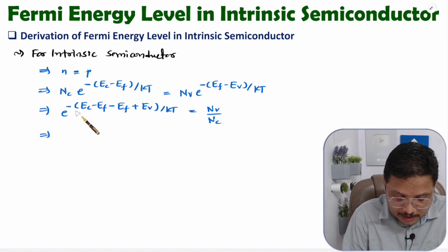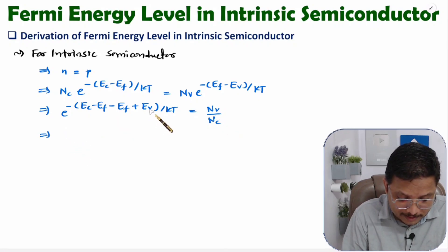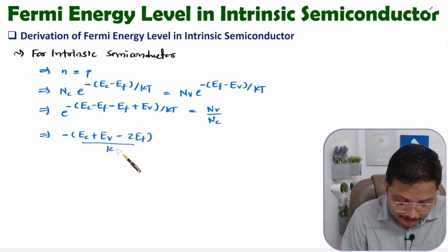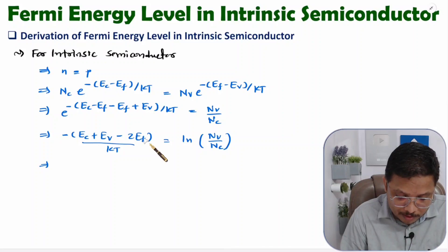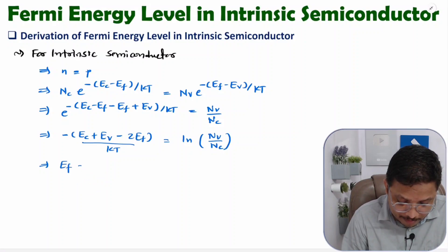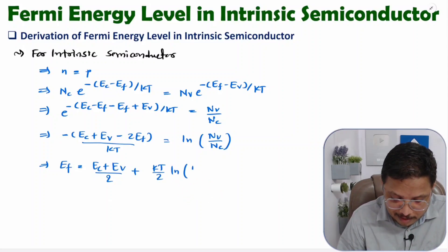This term has e to the power, so if you want to isolate the energy, you take the natural log on both sides. On the left side you will have (minus Ec plus Ev minus 2Ef) divided by KT, and on the right side ln(Nv/Nc). To isolate Ef, bring Ec plus Ev to the other side and multiply through by KT, giving Ef equals (Ec plus Ev) divided by 2, plus (KT/2) times ln(Nv/Nc).